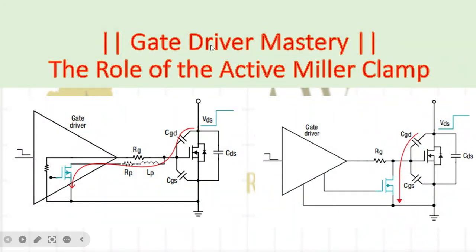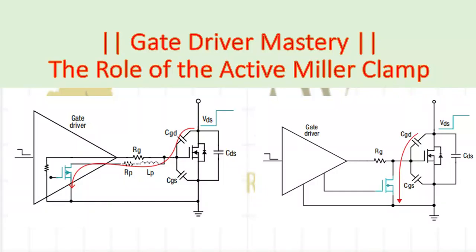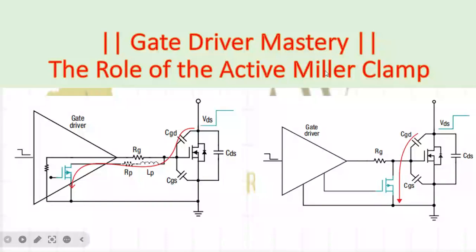Hello everyone, welcome back to another lecture. Today we are going to study the gate driver mystery: the role of the active miller clamp. This is a very interesting feature in the gate driver. You should know what is the active miller clamp, why the name 'active' is given, what is the miller clamp circuit, and why this feature is there inside the gate driver IC for protection of our device — including overcurrent protection and shoot-through protection.